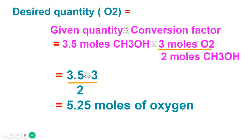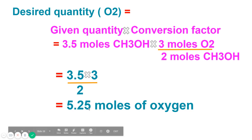To find the desired quantity of oxygen, multiply the given quantity by the conversion factor: 3.5 moles of methanol × (3 moles O₂ / 2 moles methanol). The substance to be found is written in the numerator. When you multiply, you get 5.25 moles of oxygen used. This is a simple unitary method — divide 3 by 2 and multiply by the given amount of methanol to get 5.25 moles of oxygen.